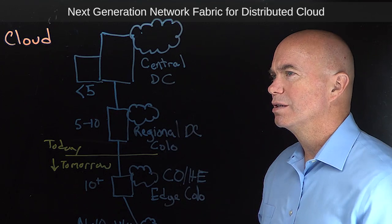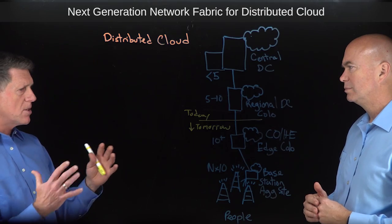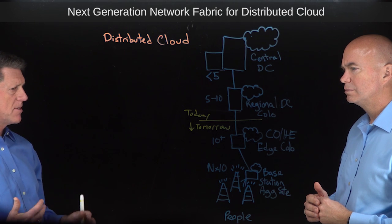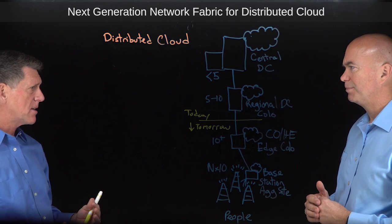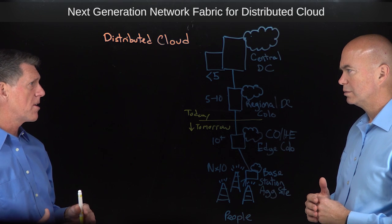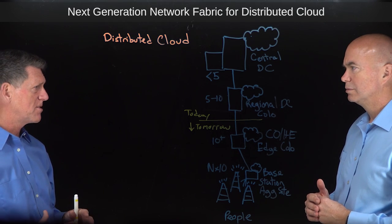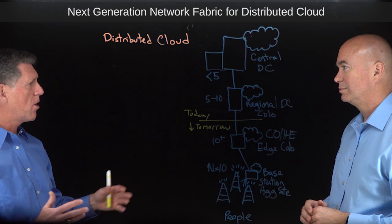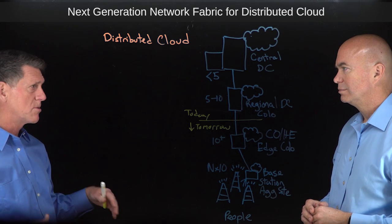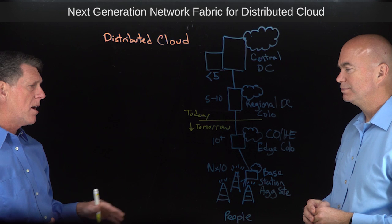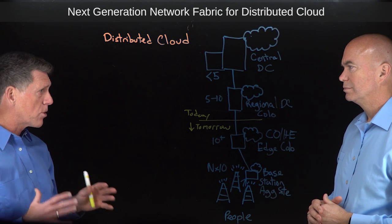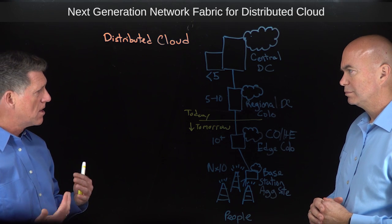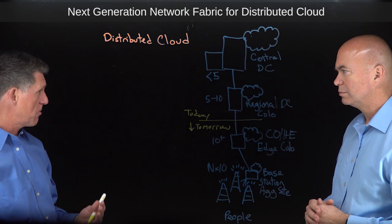How does Pluribus plug into this diagram? Because of this explosion in locations — 5, 5 to 10, 10 plus, and then n by 10 — you can have a massive increase in complexity. It's already hard enough to manage a centralized data center. Now imagine you've got all these dark locations with no people out there. We're working on solving the networking problem and simplifying that, lowering operational costs, lowering capital costs, and increasing agility.